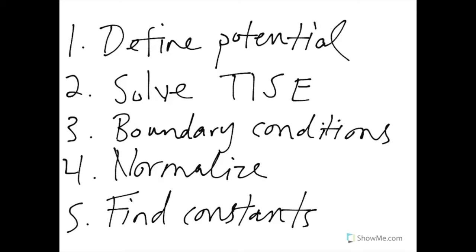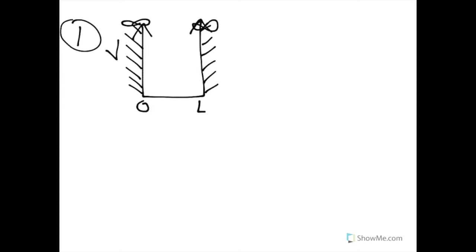So if we take step number one, we have to define the potential. I'm going to start actually with a drawing. The particle is in a box, right? So it has sides where the potential goes to infinity. And we'll say the box is a one-dimensional box with x dimension from 0 to L. Inside the box, the potential is 0. There are no forces acting on our particle which is inside the box. The potential is infinity otherwise, so anywhere outside of this box. Number one is done. Sweet, let's move on to step two.